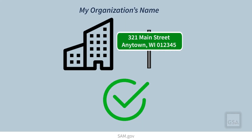Once you are assigned a Unique Entity ID, it belongs to your organization forever. You do not need to renew it or to get a new one if your Entity Name or Address changes.